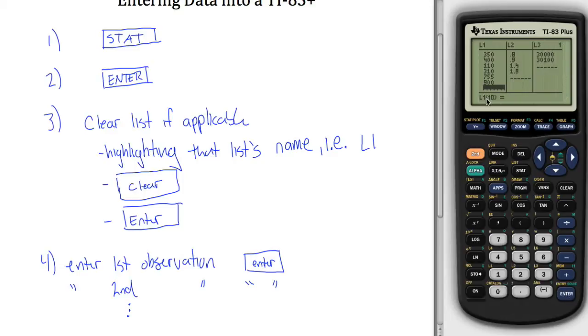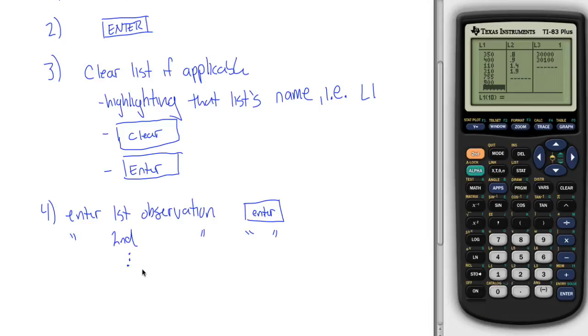So what you'll notice is that it's now asking for the 10th observation in L1. That's a good way for me to check that I've put in nine observations, which is exactly as many as I wanted. So now you're all done with your list. So you don't have to enter out of here or exit out of this menu or anything else. Just hit the button of the next thing you want to do and you have all your data entered.